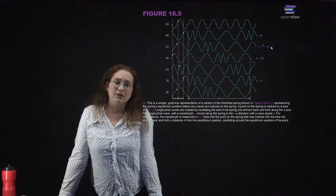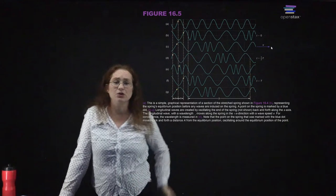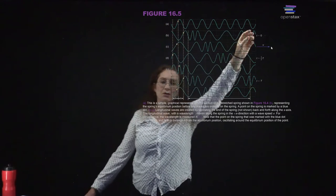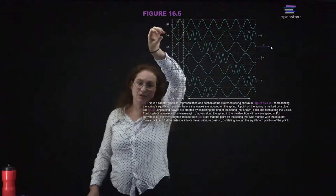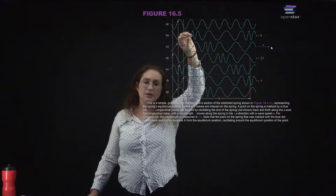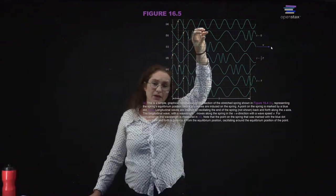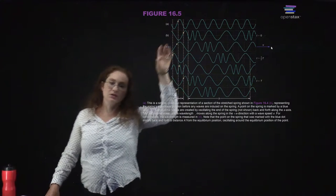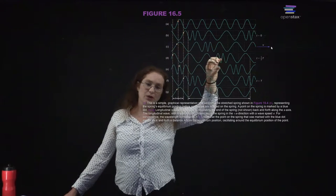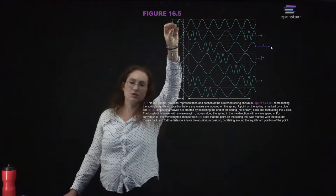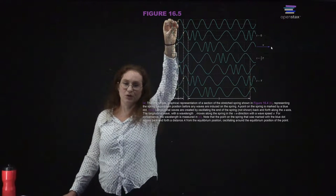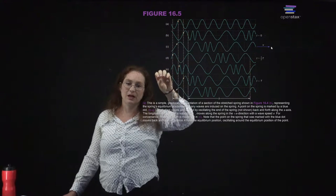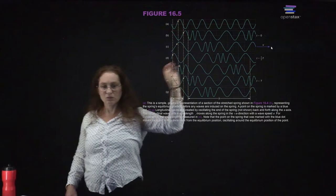In a longitudinal wave, all the coils of the slinky are initially separated by the same distance. When you push it, you compress part of the slinky and that little zone of compression moves along the slinky. This shows the progressive time snapshots as the wave travels along.